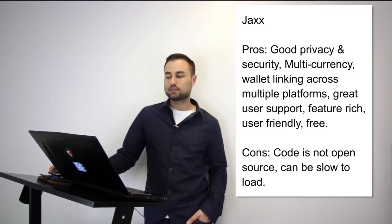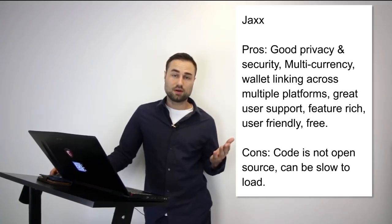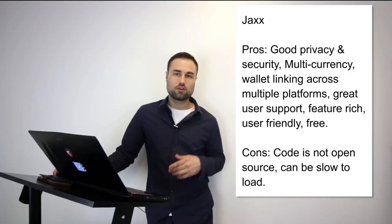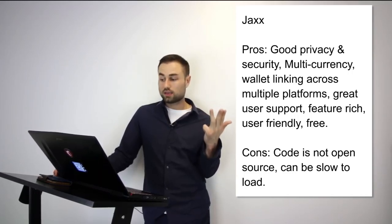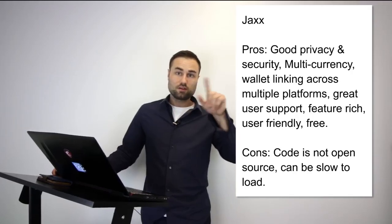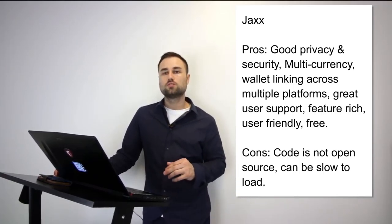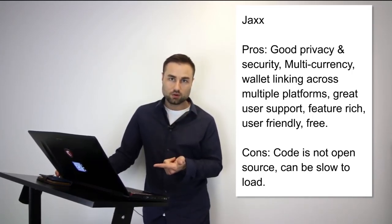Next is Jaxx — another mobile wallet. Jaxx supports different currencies such as Ether, Ether Classic, Dash, Litecoin, Bitcoin, and many more. It has one of the best UX designs I've seen — when you log in you immediately know what's going on. Pros: good privacy and security, multi-currency, links across multiple platforms so your desktop and iPad sync with each other, and very user-friendly. Cons: it's open source and can be really slow. Jaxx is my go-to multi-currency wallet for day-to-day transactions.